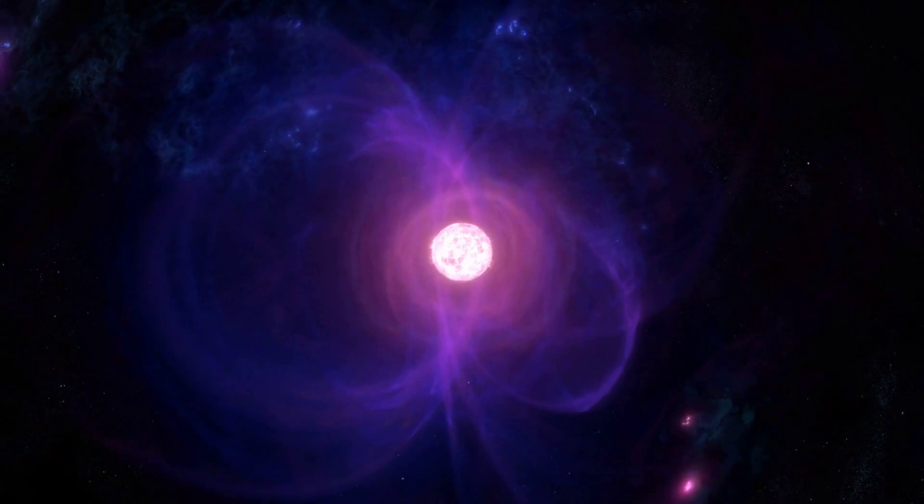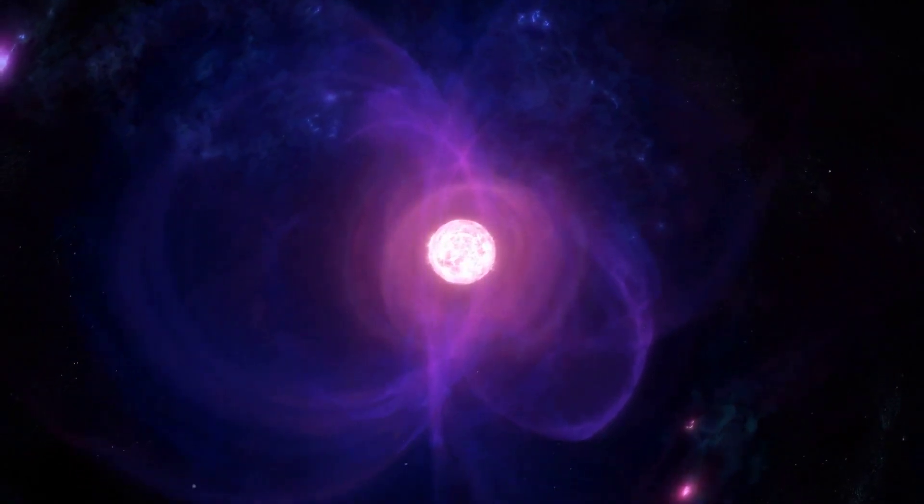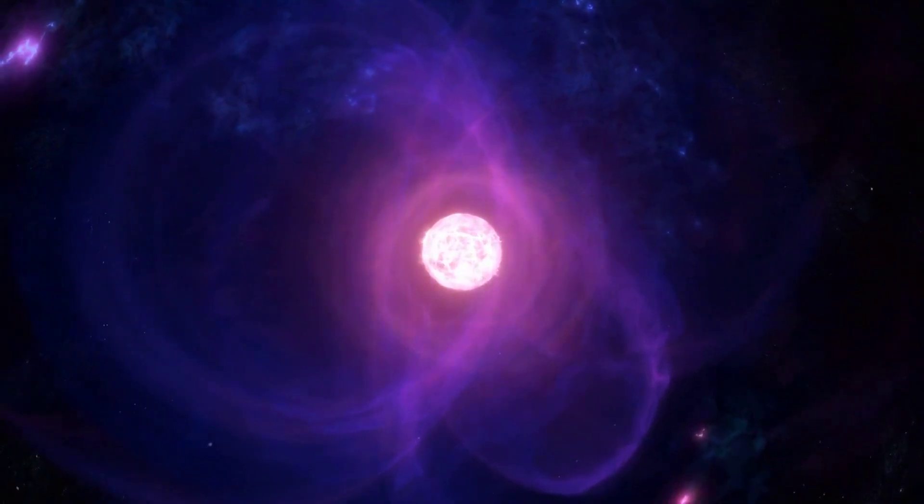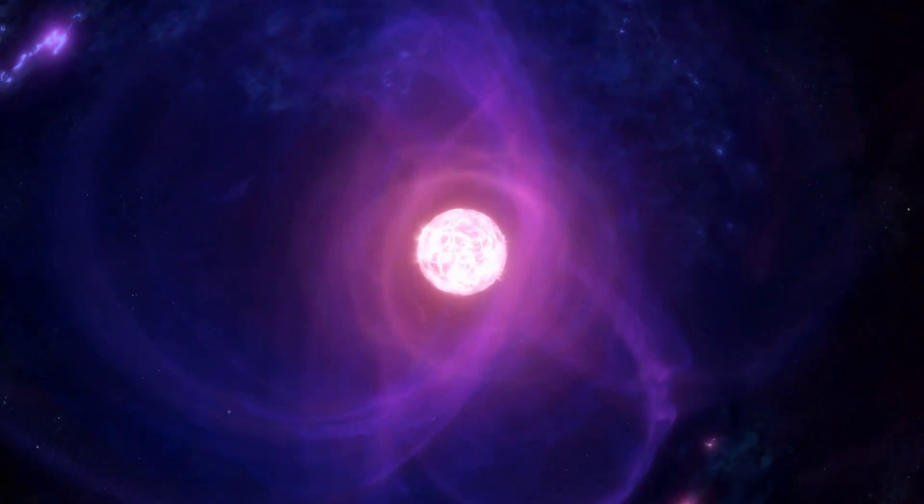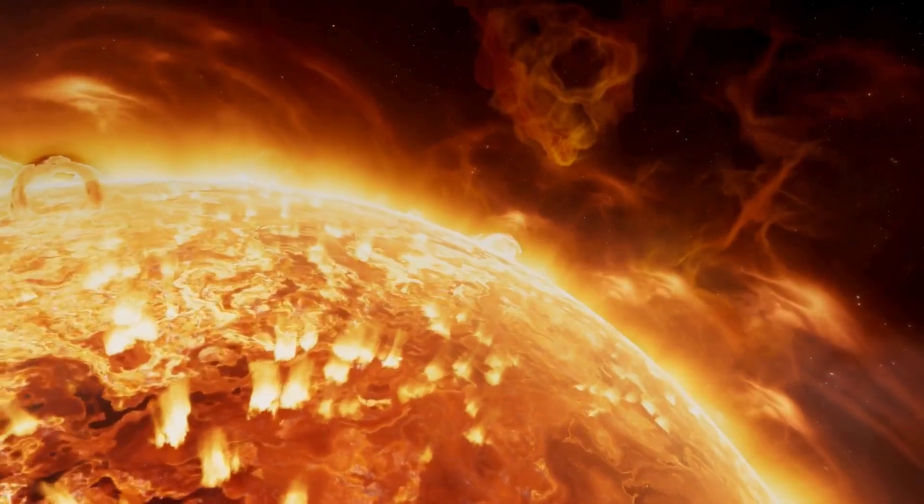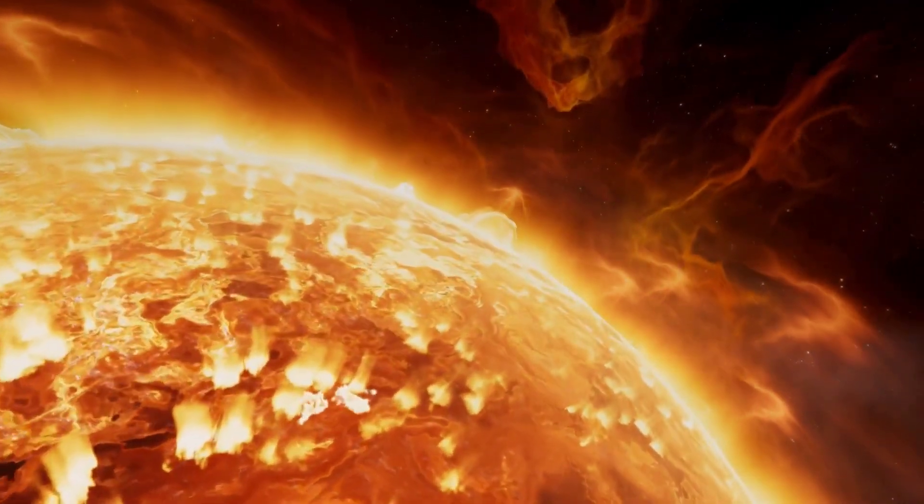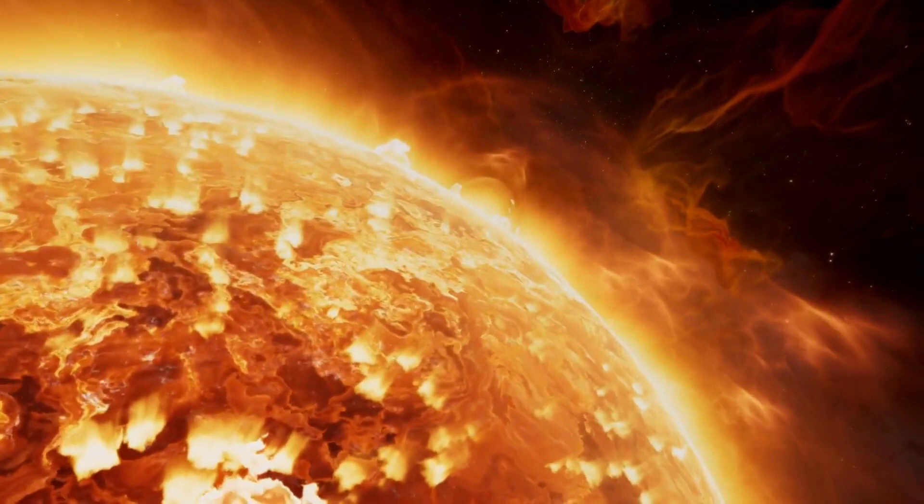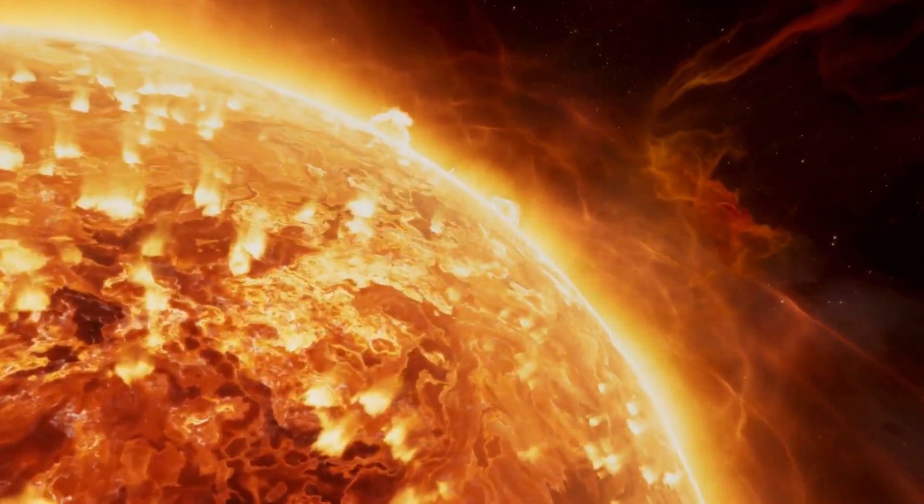Inside a star, hydrogen is compressed and fused to form helium through the process of nuclear fusion. This fusion releases an immense amount of energy, producing the light and heat that we observe. Stars spend most of their lives in a precarious balance. Gravity pulls everything inward, while the pressure of energy released by fusion pushes outward.